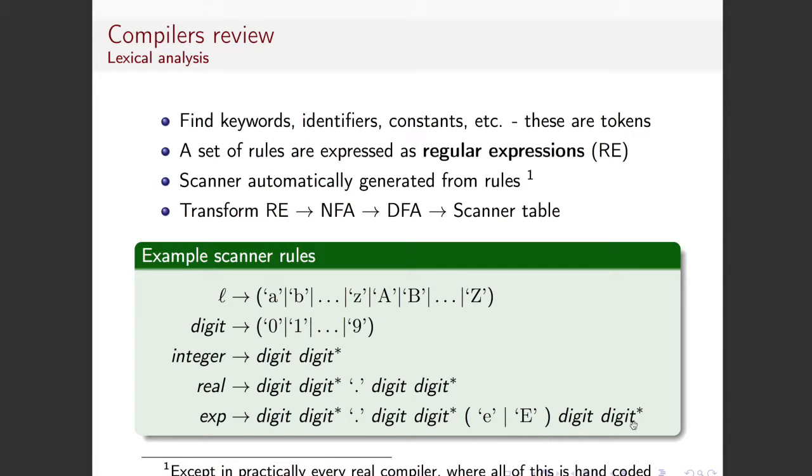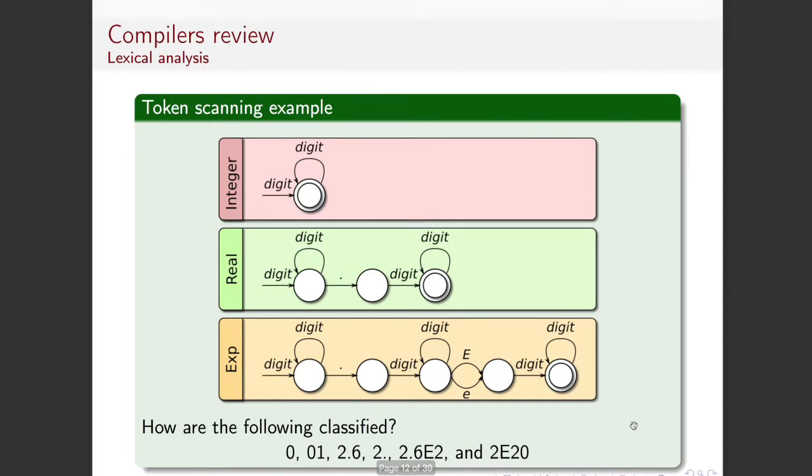All right. So, here are some DFAs. And we see that there are DFAs because for every state there is only one edge coming out of these things for any particular input. And actually, we've grouped these things because whereas you see here it says digit, this actually represents a whole bunch of edges. One for each of the digit characters that you could see.